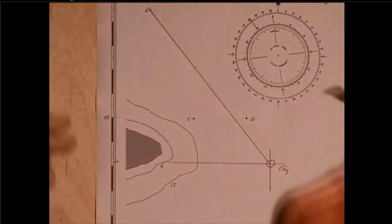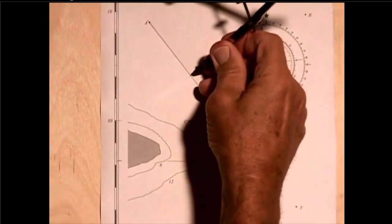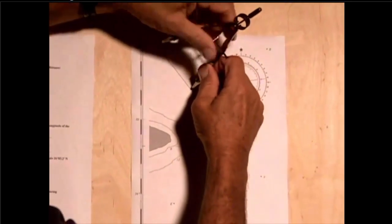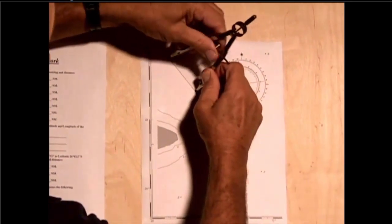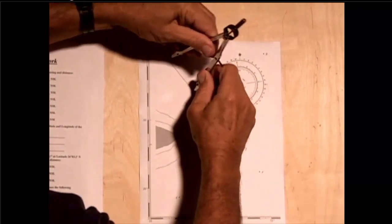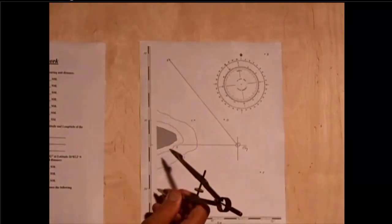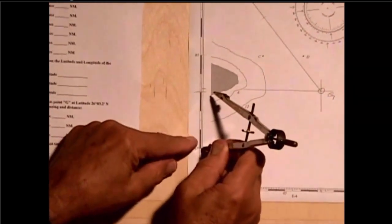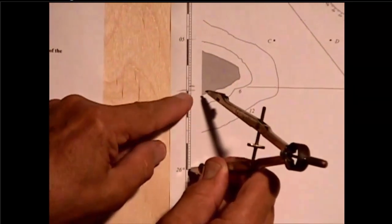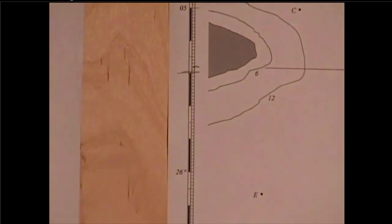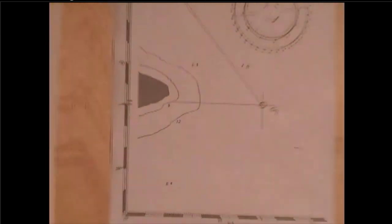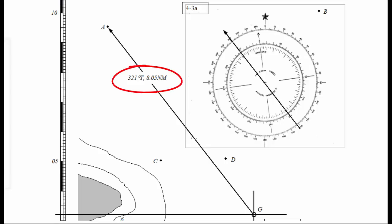I'm now going to take my dividers and put the point on that mark. And adjust these until it goes through point A. And measure the additional distance. So, that's 1, 2, 3, 0.05 plus 5 is 8.05 nautical miles.